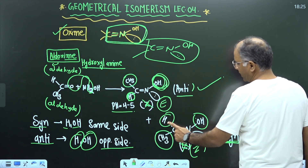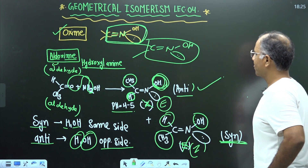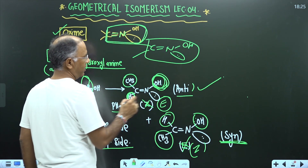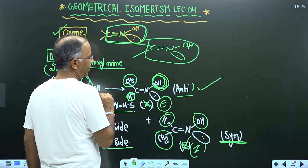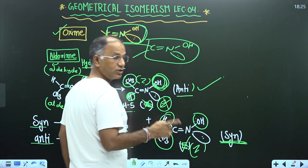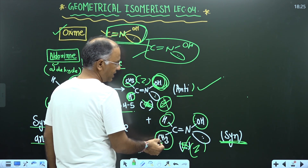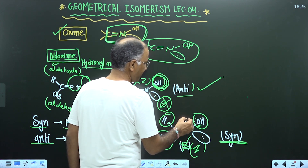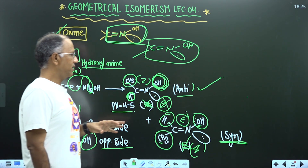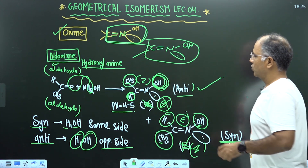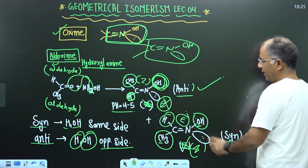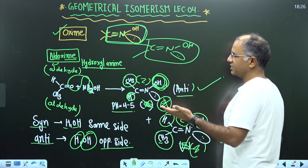E and Z are determined on the basis of atomic number. For Z: H and carbon — carbon is high priority; lone pair and O — O is high priority. For E: H and carbon — carbon is high priority; lone pair and O — O is high priority, therefore it is E. There is no direct relation between syn/anti and E/Z. Syn means H and OH on the same side; for E/Z we must check atomic number as discussed in previous lectures.